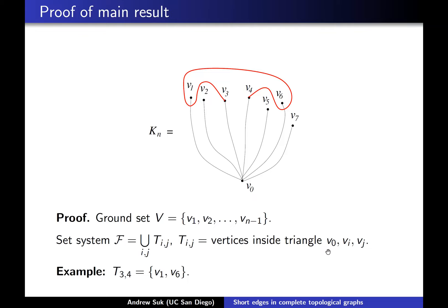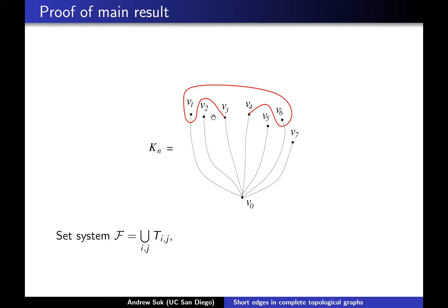To eventually use that matching result, I'm going to define a set system. The ground set will be these vertices, and I'll define the set system F with sets T_{ij}, where T_{ij} will be the set of vertices that lie inside of the triangle V₀, V_i, and V_j. For example, looking at T_{34}: I look at the triangle V₀, V₃, and V₄. Notice that the triangle is a simple closed curve because any two of its edges have an endpoint in common, so their interiors won't cross. Whatever vertices lie inside of the simple closed curve — that's precisely the set T_{34}. This set system has on the order of n² sets, possibly with repetition.